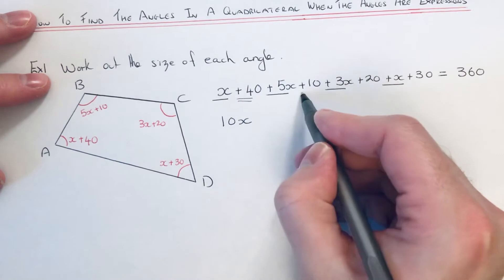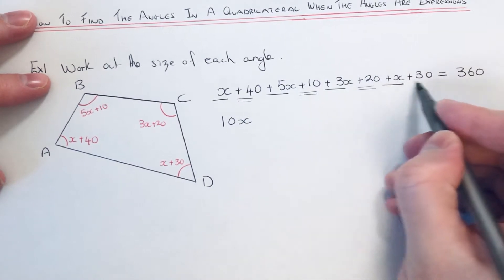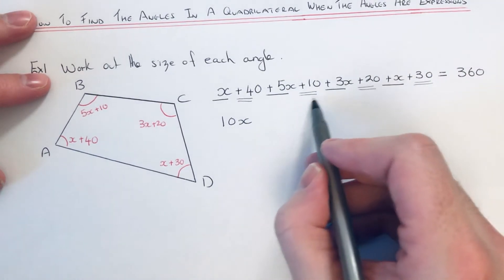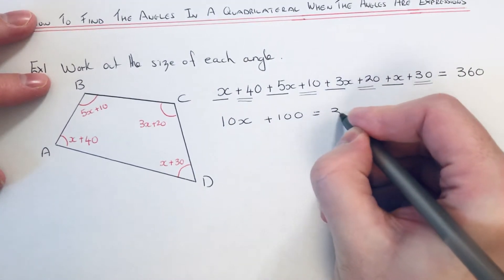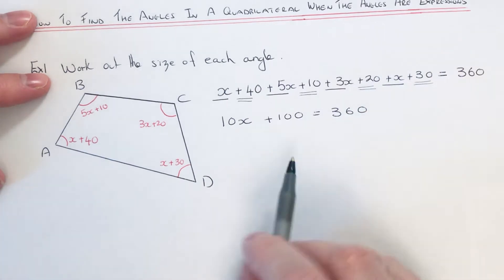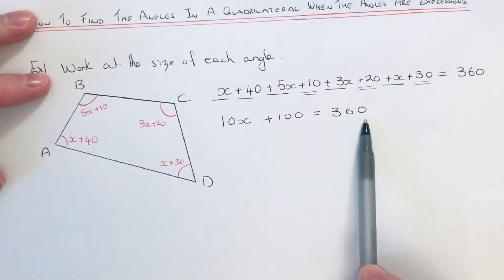Adding our numbers up: 40, add 10, add 20, add 30, that gives us 100. So our simplified equation is 10x plus 100 equals 360.